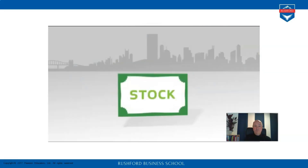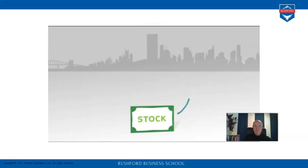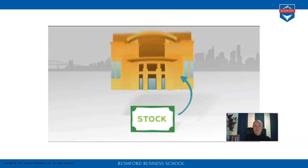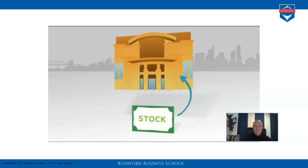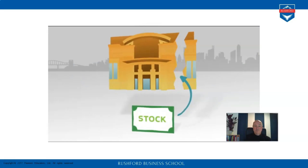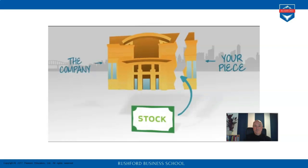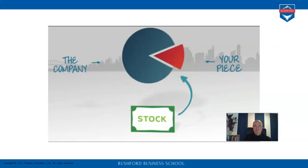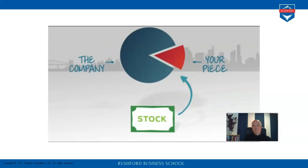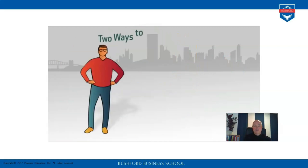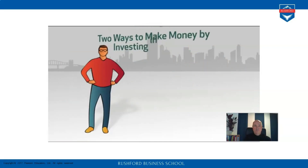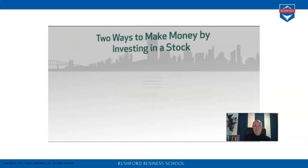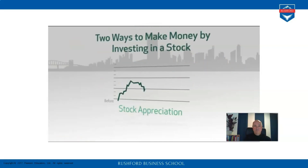A stock represents partial ownership of a company. When you purchase a stock you're buying a piece or a share of a company. By owning a share you own a small fraction of the company's assets and have a claim on its future earnings. There are two ways you can make money by investing in stock.